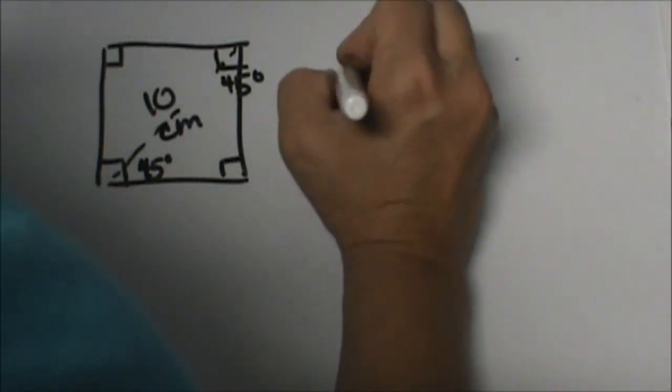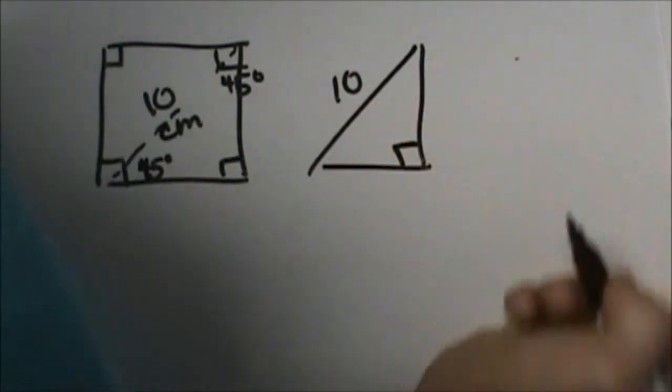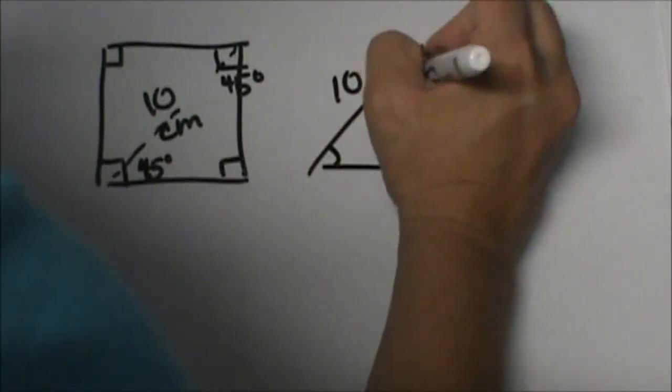If this side is 10, which is the hypotenuse, the diagonal, this is 90 and these two are 45.